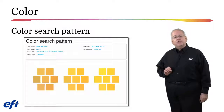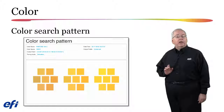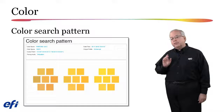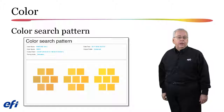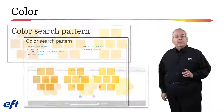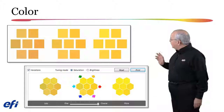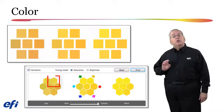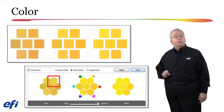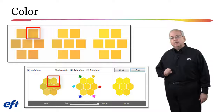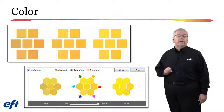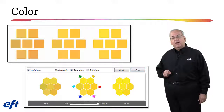The color search pattern option will print all of the displayed 21 icons with their saturation, brightness, and/or hue change. In the color editor interface, simply click on the hexagon that corresponds with the printed patch that you feel best matches the desired color, and the color recipe for that patch will be used when printing that specific spot color.